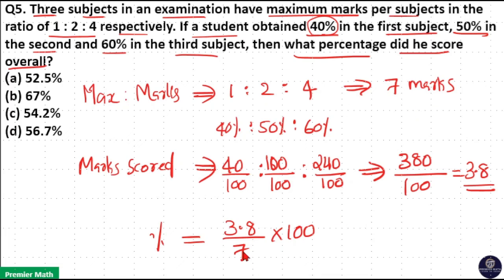So 3.8 by 7 times 100 is the percentage, which equals 380 by 7.